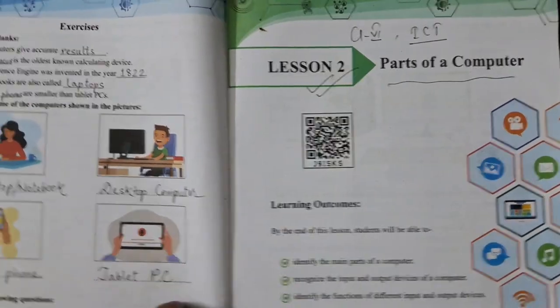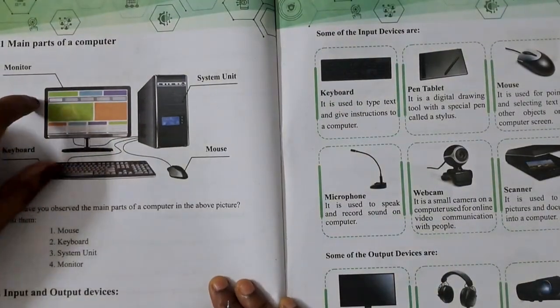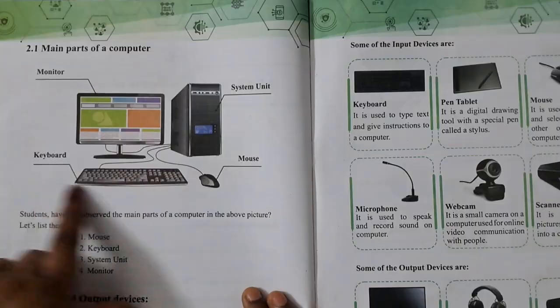Learning outcomes are easy to learn. Main parts of a computer: monitor, system unit, keyboard, mouse.